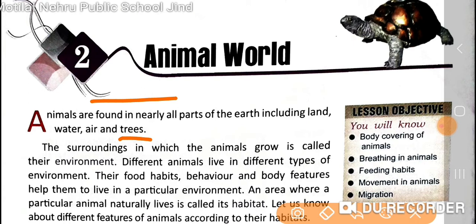What are the different kinds of animals? The surrounding in which animals grow is called their environment. Different animals live in different types of environments. Their food habits, behavior, and body features help them to live in a particular environment.